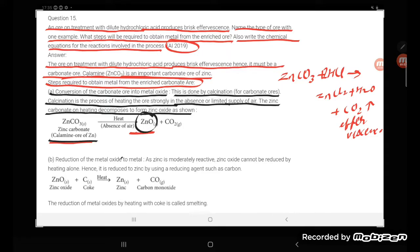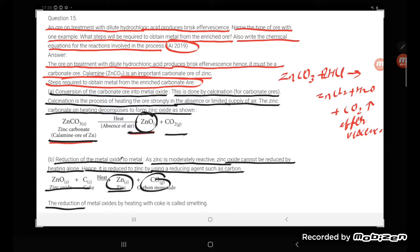Now, reduction of the metal oxide to metal. As zinc is moderately reactive, zinc oxide cannot be reduced by heating alone. Hence it is reduced using a reducing agent such as carbon: ZnO plus C gives Zn plus CO.